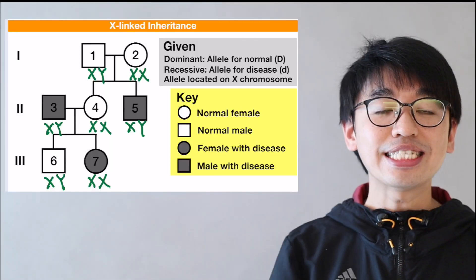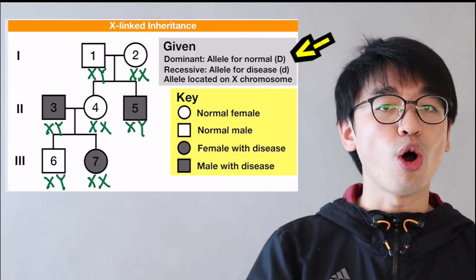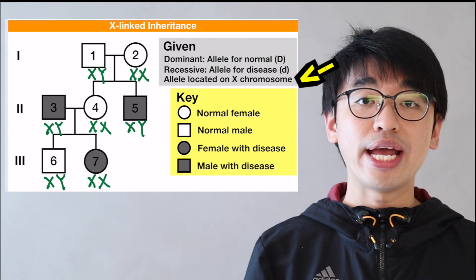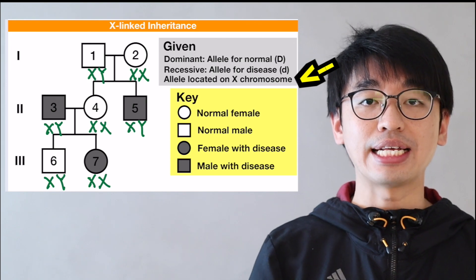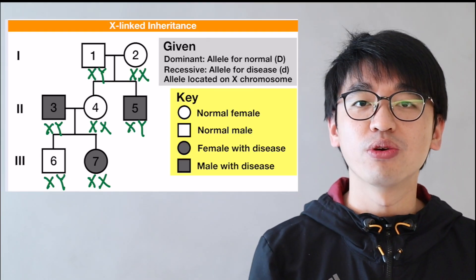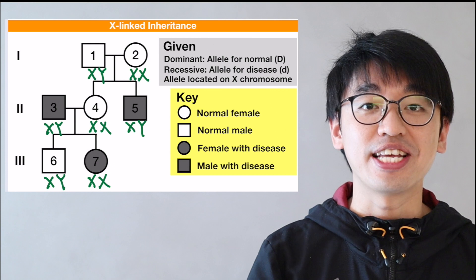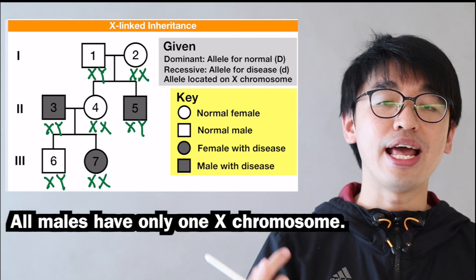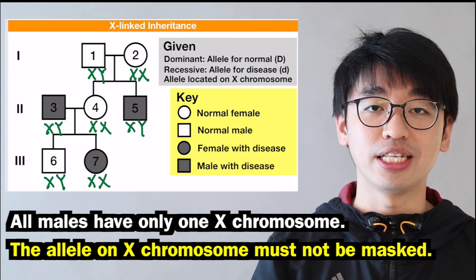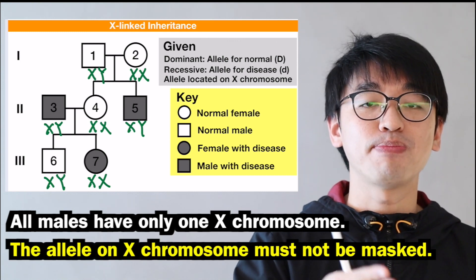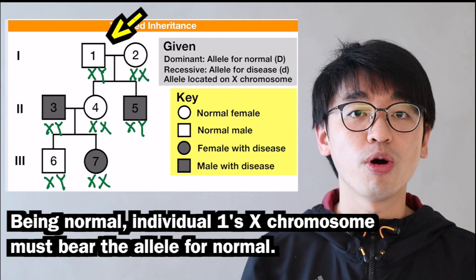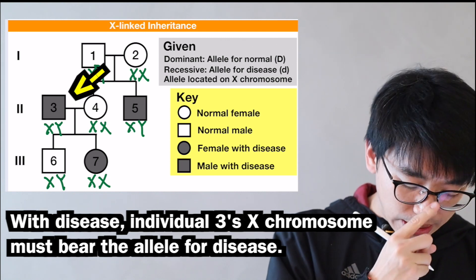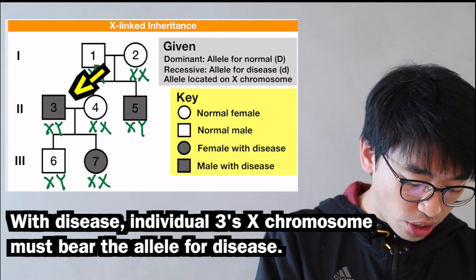Given that the allele for normal is dominant, the allele for disease is recessive, and the gene is located on the X chromosome — it is X-linked. For males, determining the genotype is straightforward because each male has only one X chromosome, so whatever phenotype is shown, that X chromosome must bear that allele. Individual 1 is normal, so his X chromosome bears the allele for normal; individual 3 has the disease, so his X chromosome bears the allele for disease.